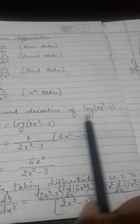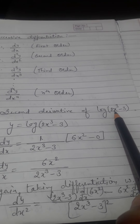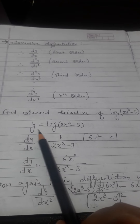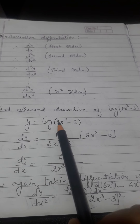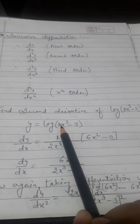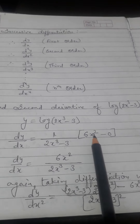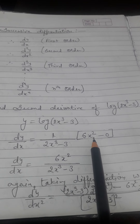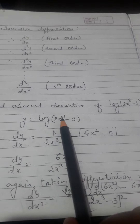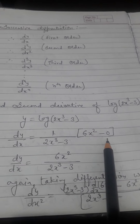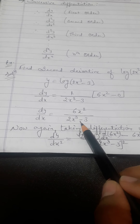An illustration: find the second derivative of the function y = log(2x³ - 3). We have to differentiate it two times. So dy/dx: by the chain rule, assuming (2x³-3) as x, differential of log x is 1/x. Then the differential of (2x³-3) is 6x² (since the differential of the constant -3 is 0). So the first derivative is 6x²/(2x³-3).